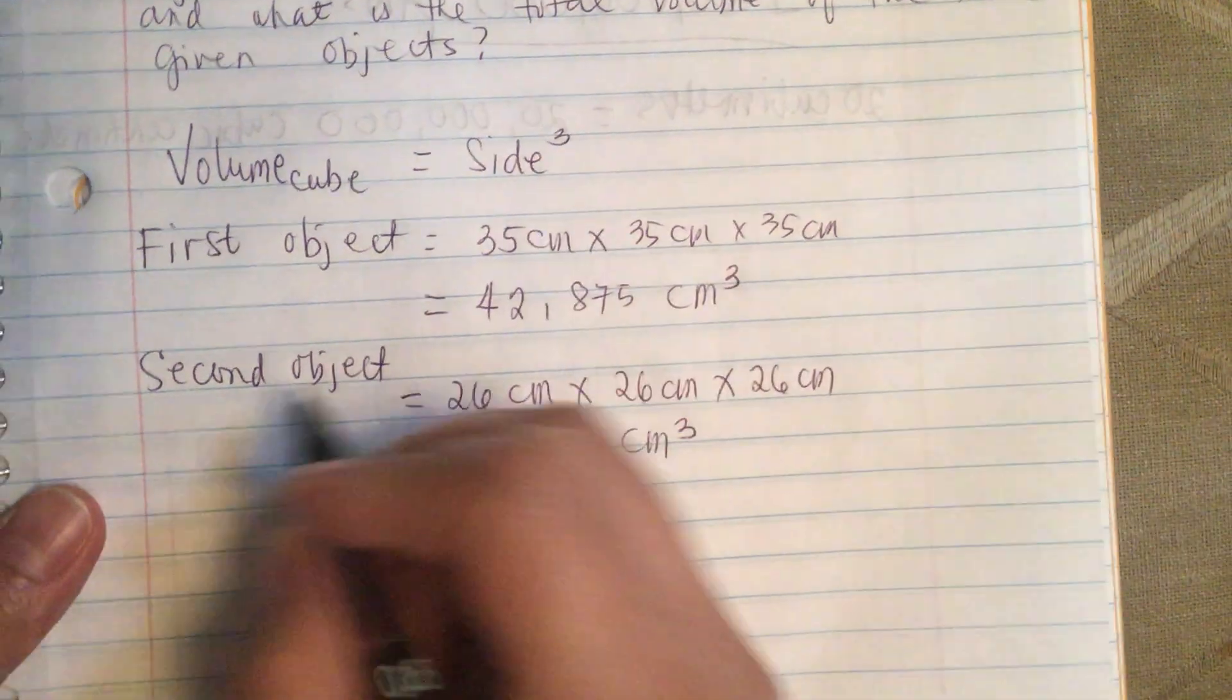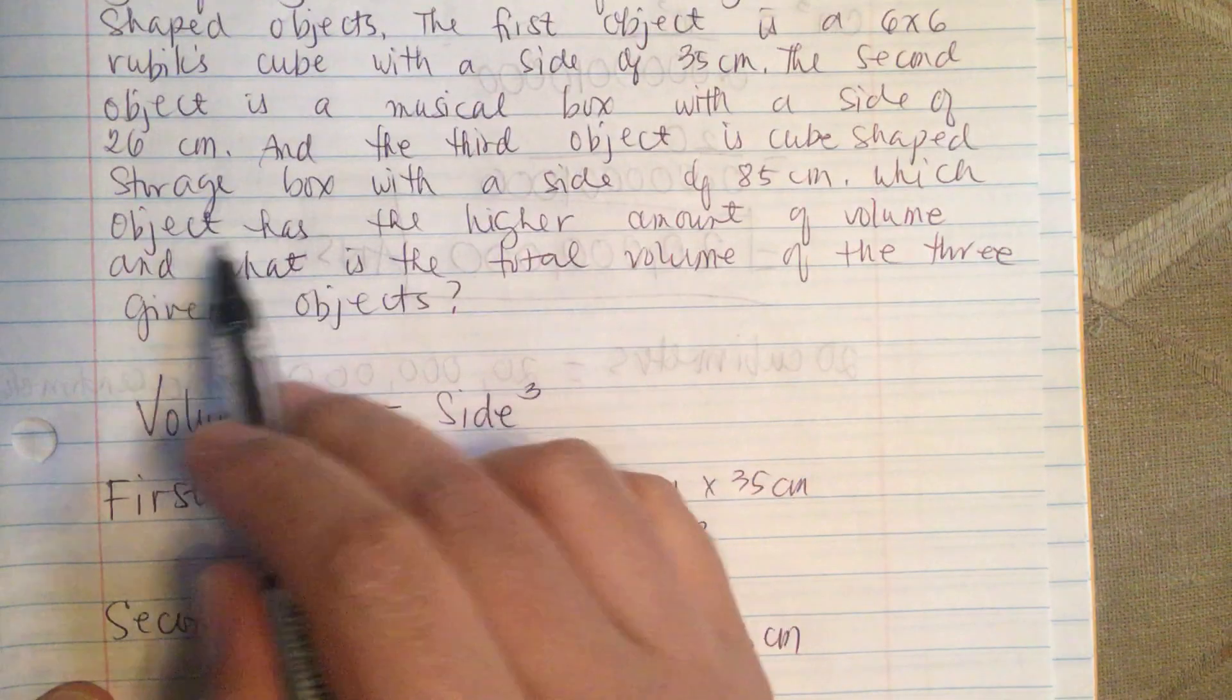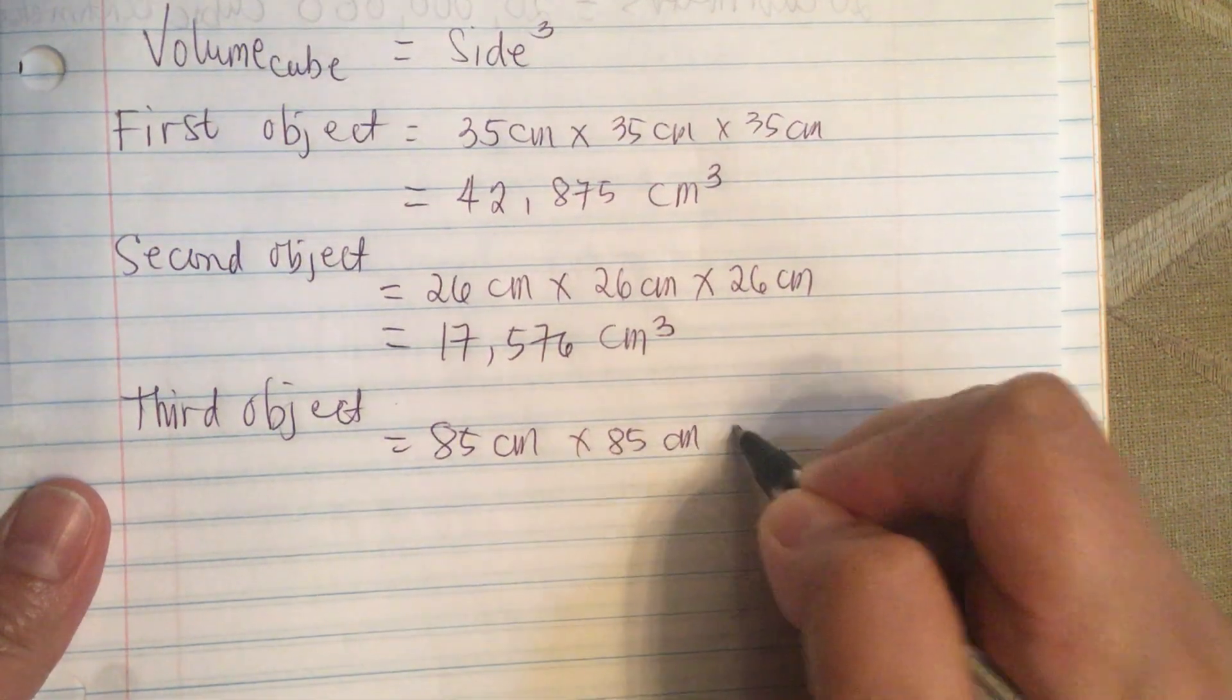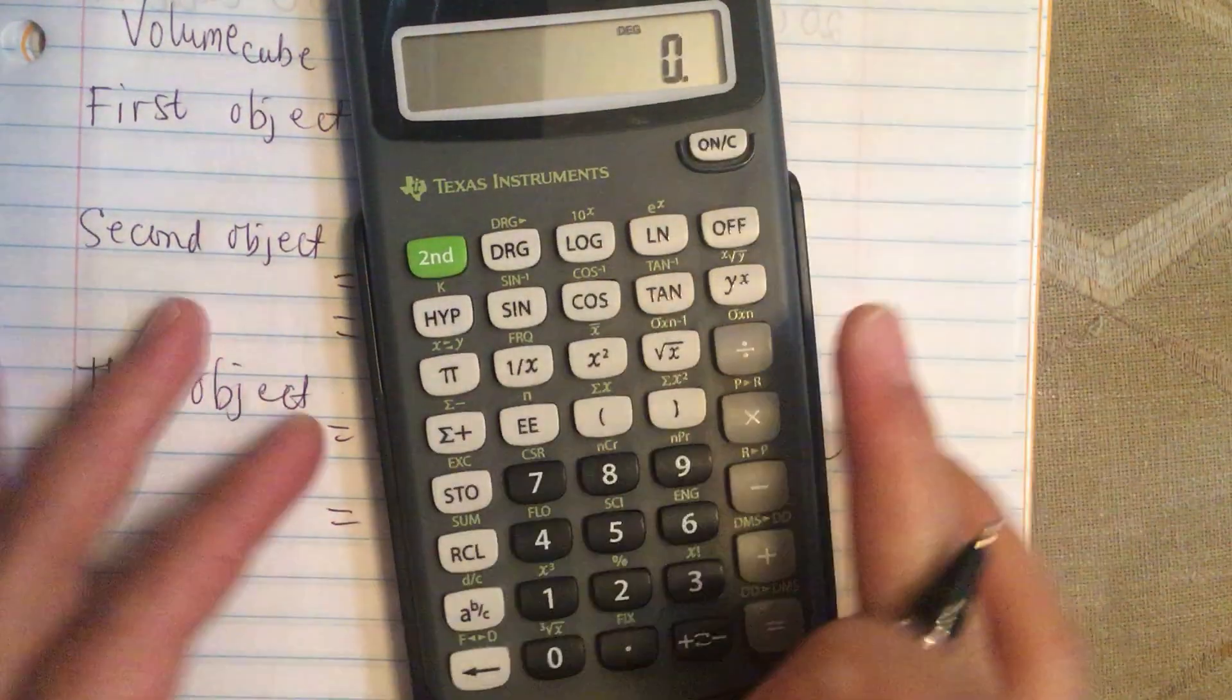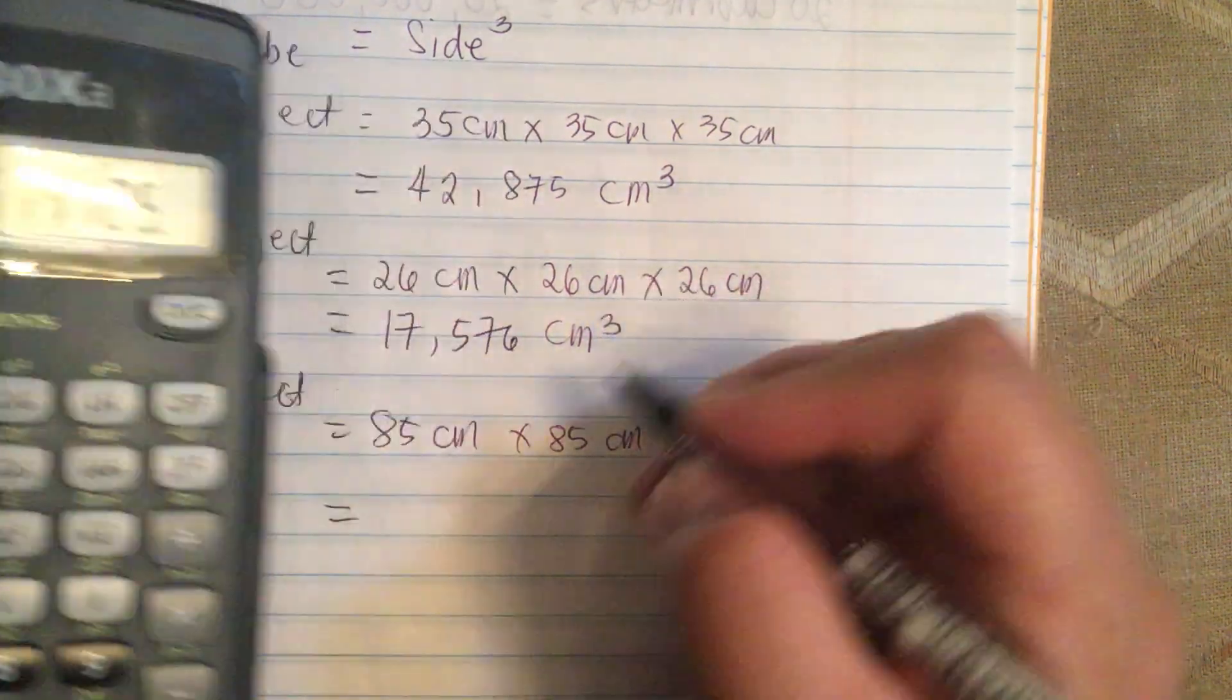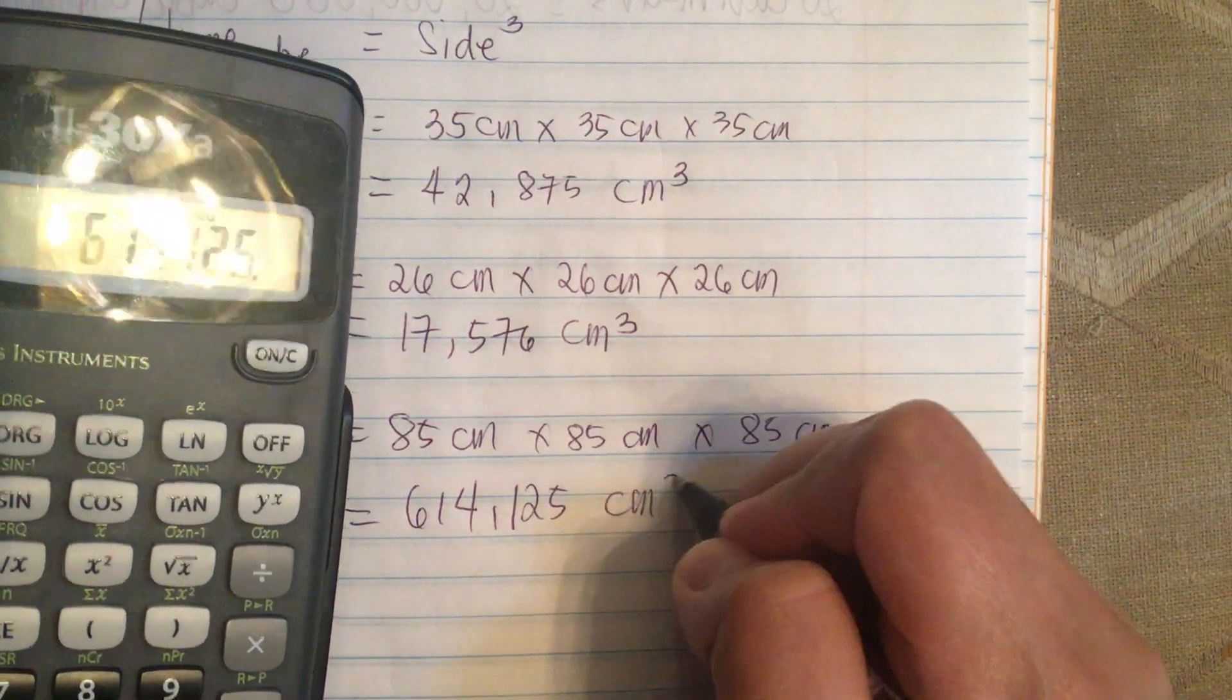Now the third object is equal to 85 times 85. So this is equal to 614,125 cubic centimeter.